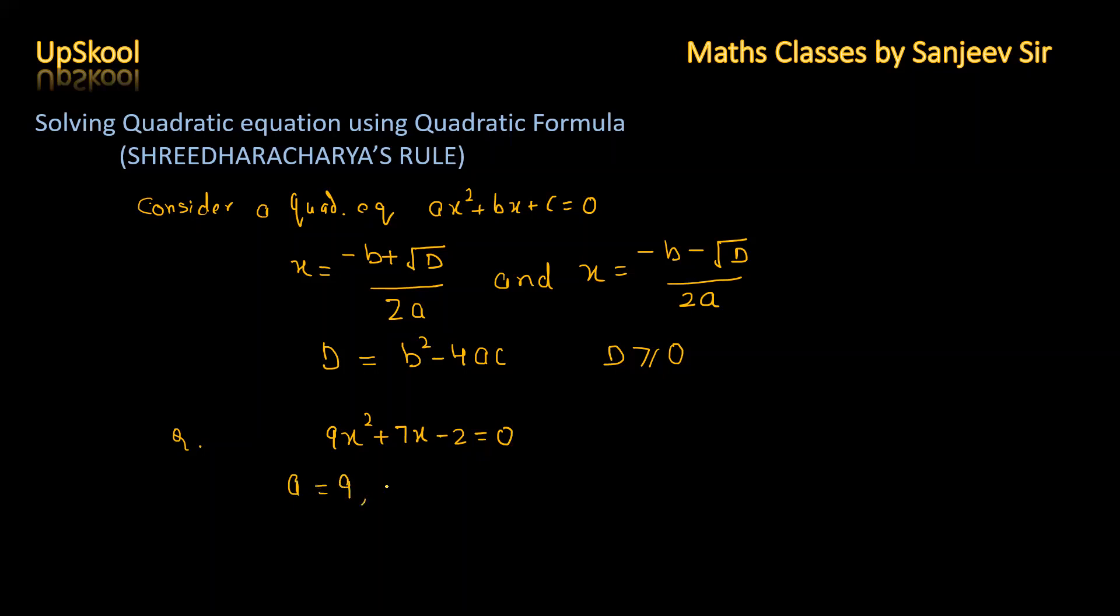Here a is equal to 9, b is equal to 7 and c is equal to minus 2. So first we will find discriminant d, b square minus 4ac.